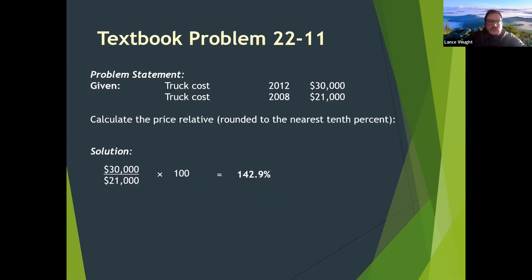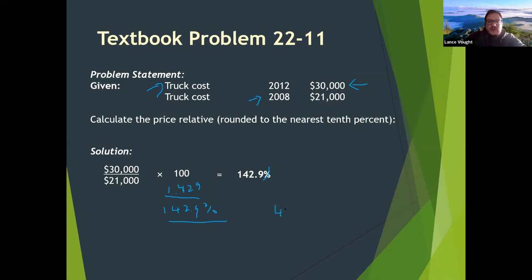For a price index example: we want to figure out how much more expensive a truck is in 2012 versus 2008. Take the price in 2012 and divide by the base year price of 2008: 30,000 divided by 21,000 gives 1.429. Multiply times 100 to get 142.9. So the truck in 2012 is 142.9% of what it cost in 2008 — meaning it's 42.9% higher than it was in 2008.